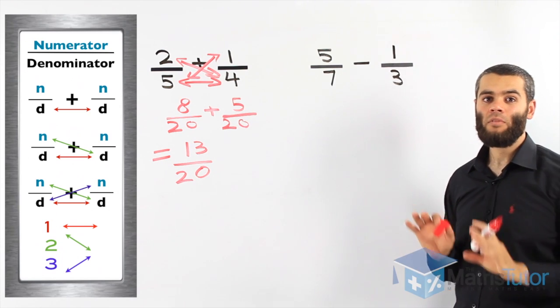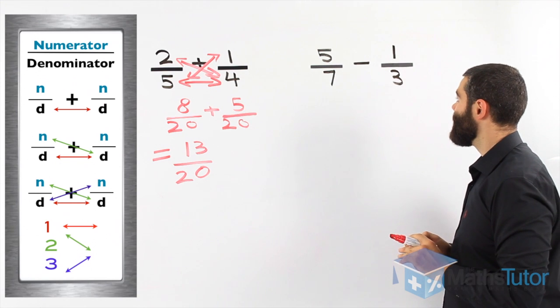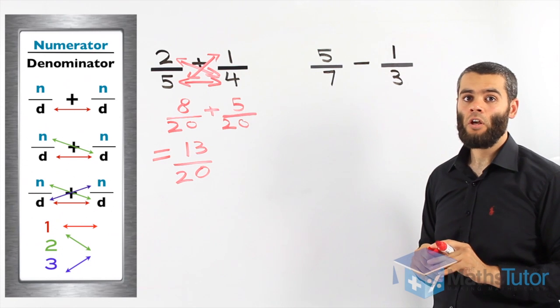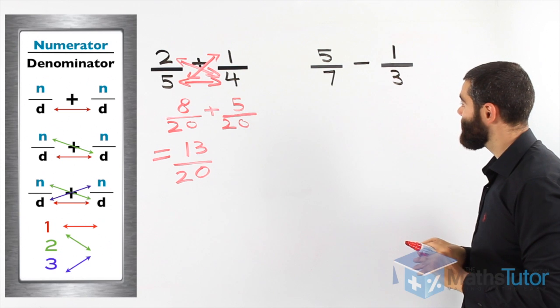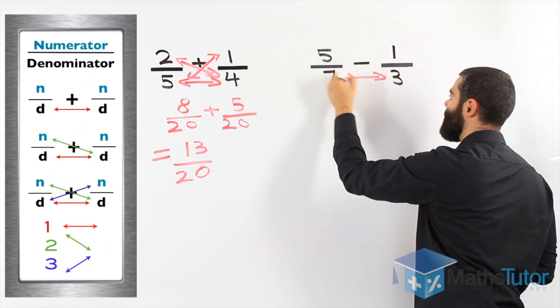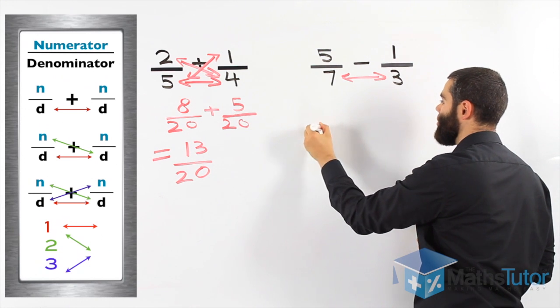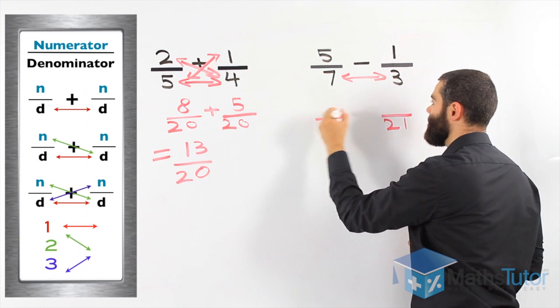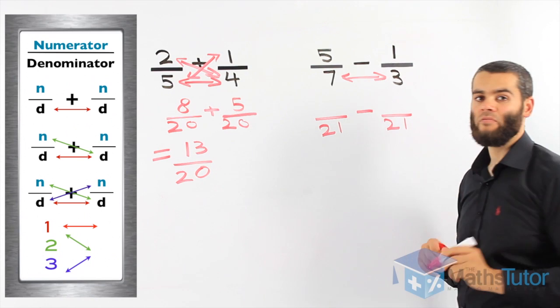Subtraction, same concept. We can't take away unless we have common denominators. Here, they are different. Well, let's follow. First step, as marked in the red arrow, we multiply the denominators to get a common denominator. Three times seven is twenty-one. That's done.